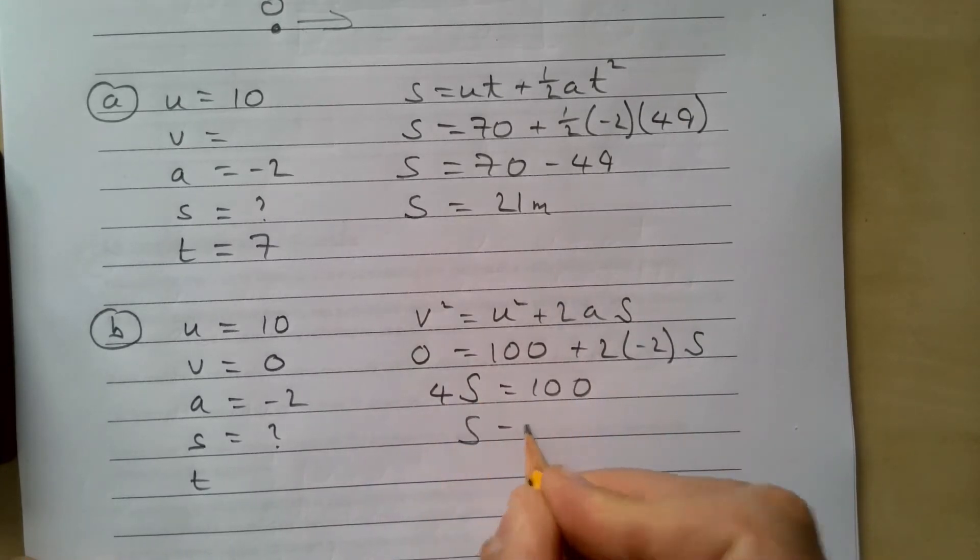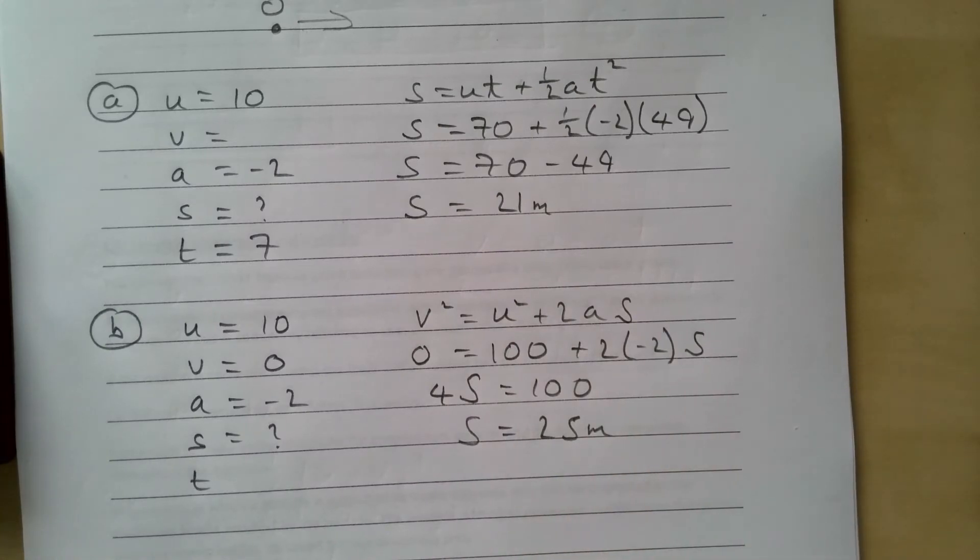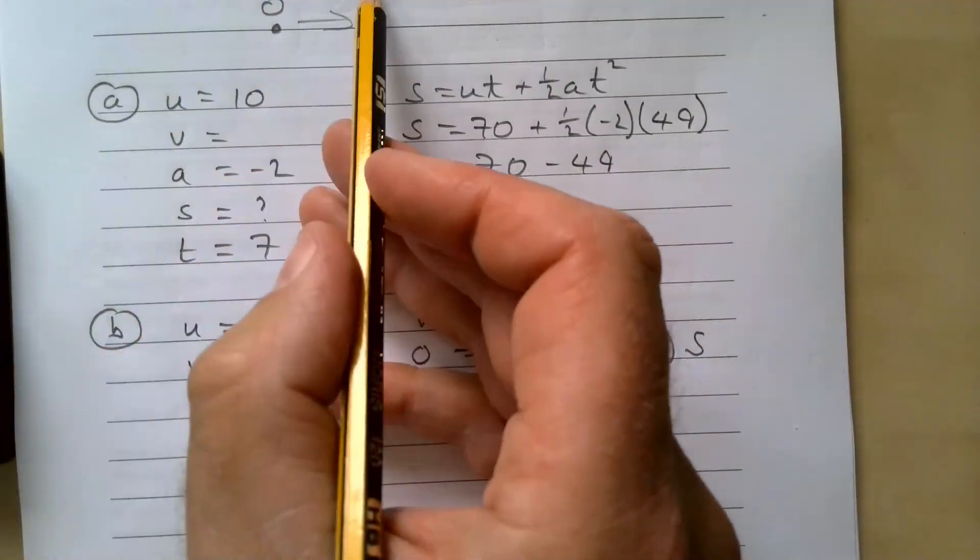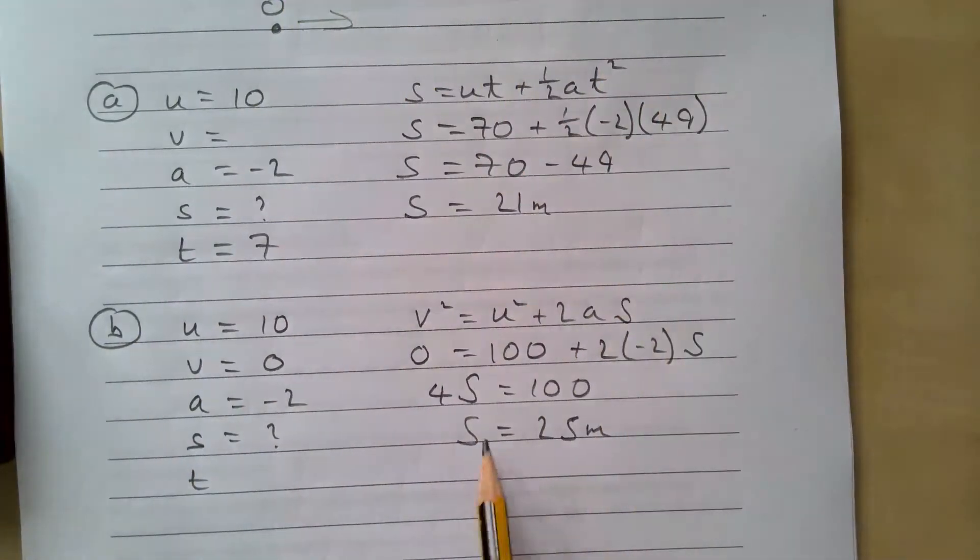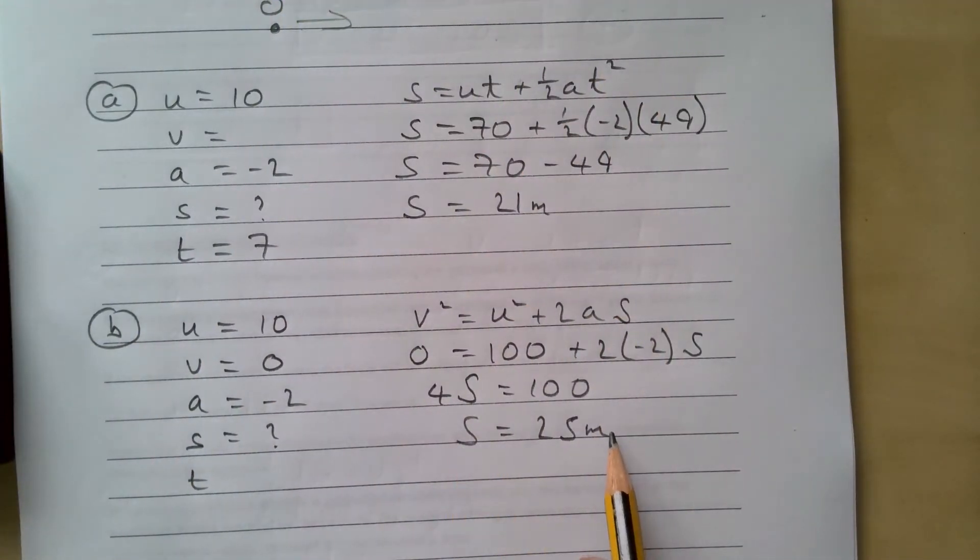So in that case, s is going to be 25 meters. So how far from o does the body come to instantaneous rest and what is the value of t? So s is 25 meters.